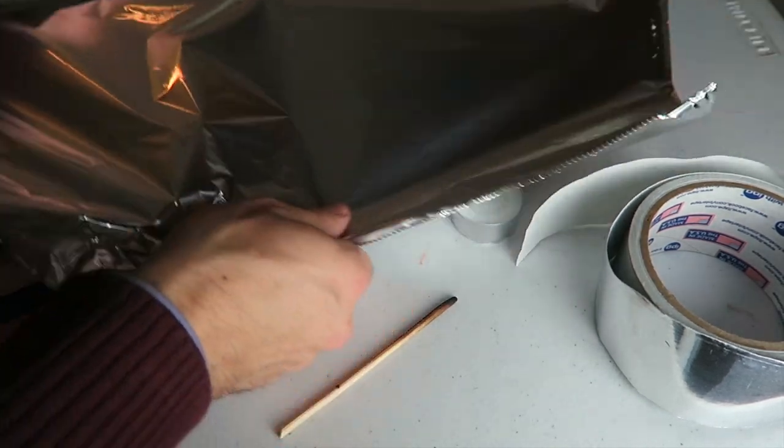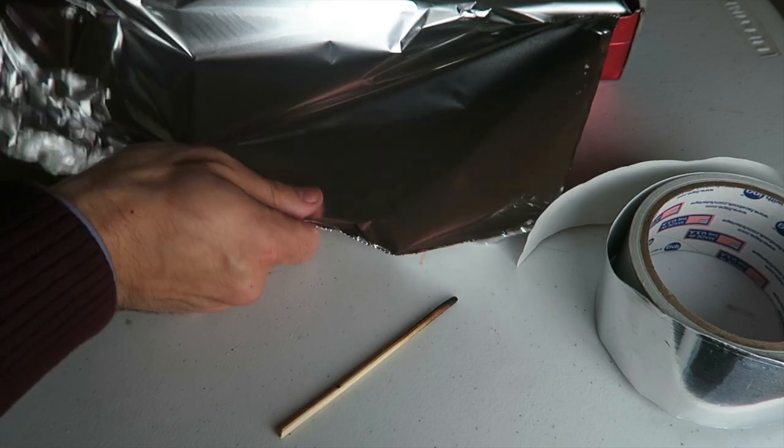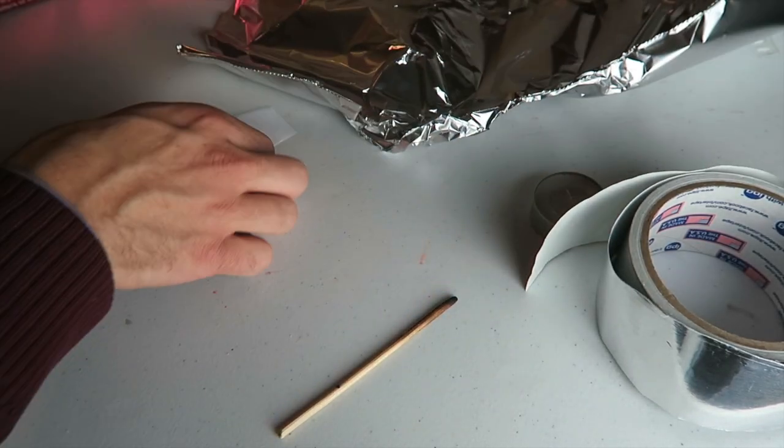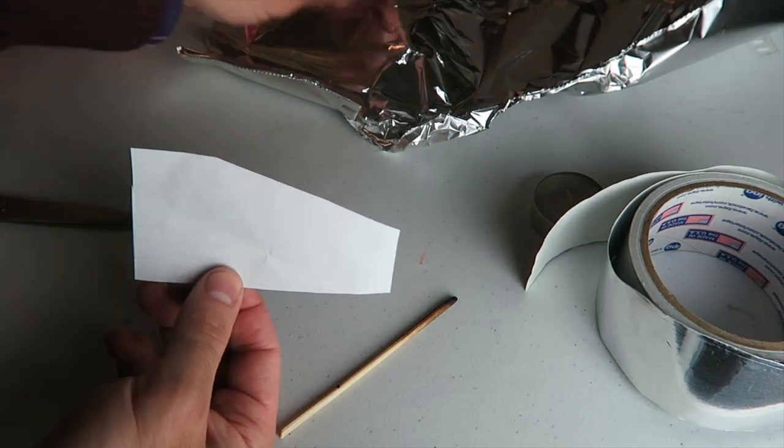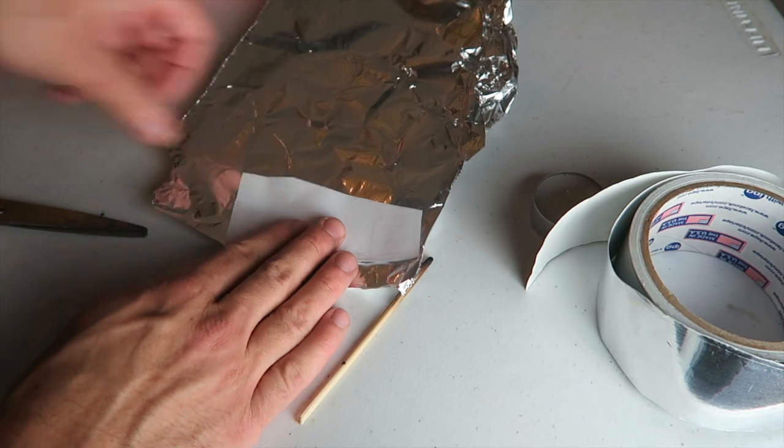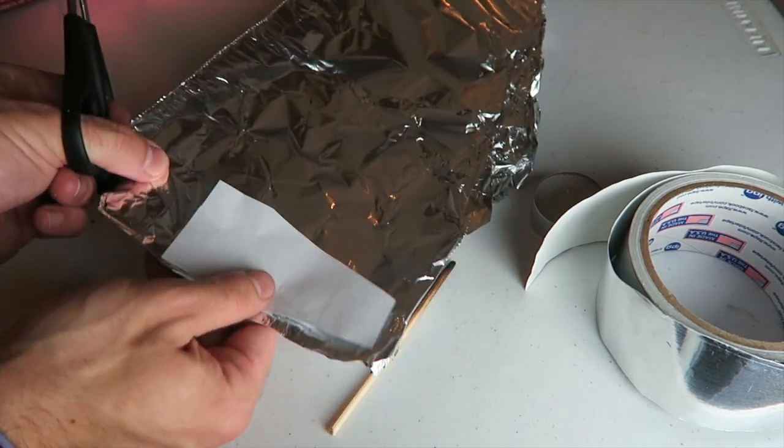Take a piece of heavy-duty aluminum foil and then you need to cut out a piece that's the same size as this paper. So just lay it flat over it and cut it out.